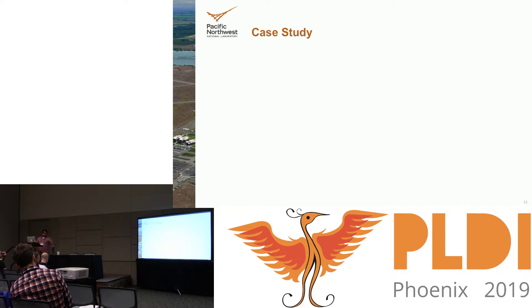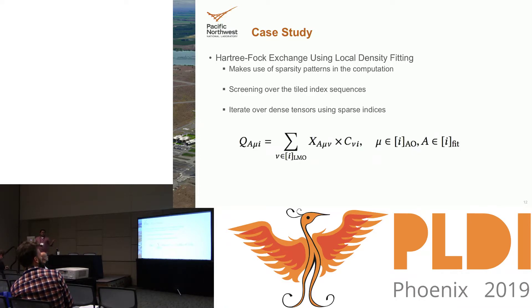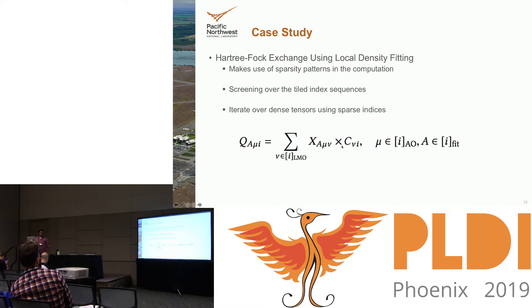As a case study, I'll mention Hartree-Fock exchange using local density. I'm not an expert and couldn't understand most of the paper, but that's true for most domain scientists — they have to decipher equations embedded in papers and construct sparse computations themselves. In the mathematical representation there is screening over mu, nu, and lambda, which is very similar to our dependent index sequence: depending on atom i values, you screen certain mu, nu, and lambda values for the computation.